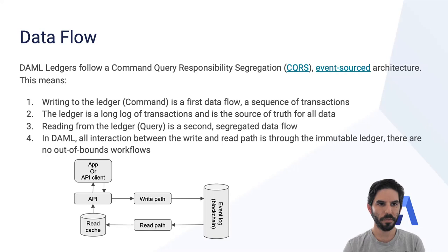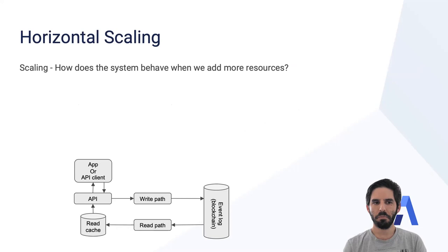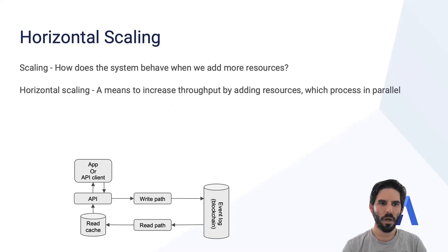So let's talk about scaling. Scaling generally means how does the system behave when we add more resources to it. Horizontal scaling is a means to increase the throughput or reduce the latency by adding more resources to the system — resources which can process in parallel.